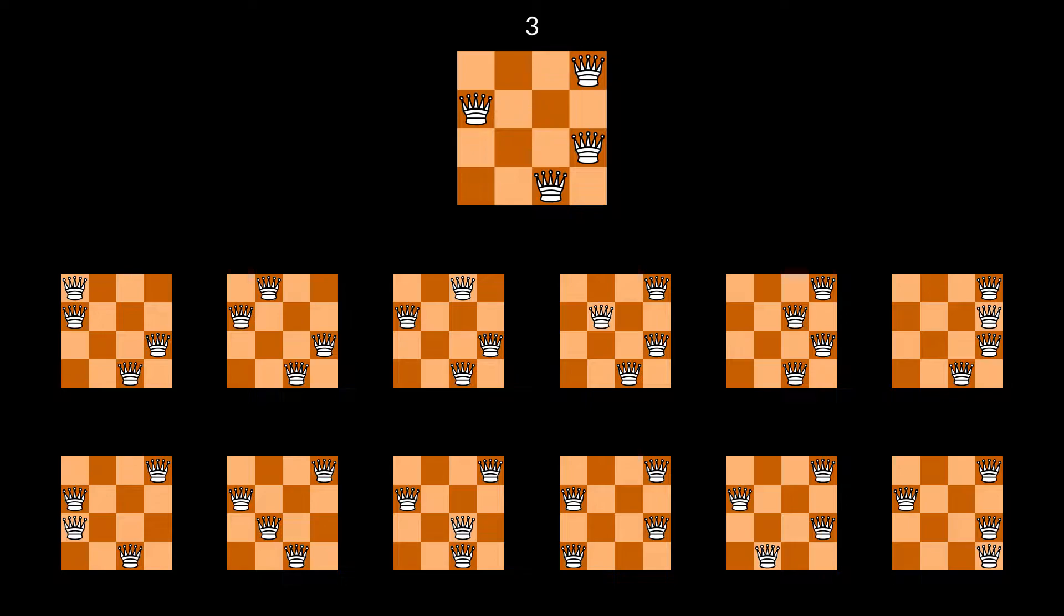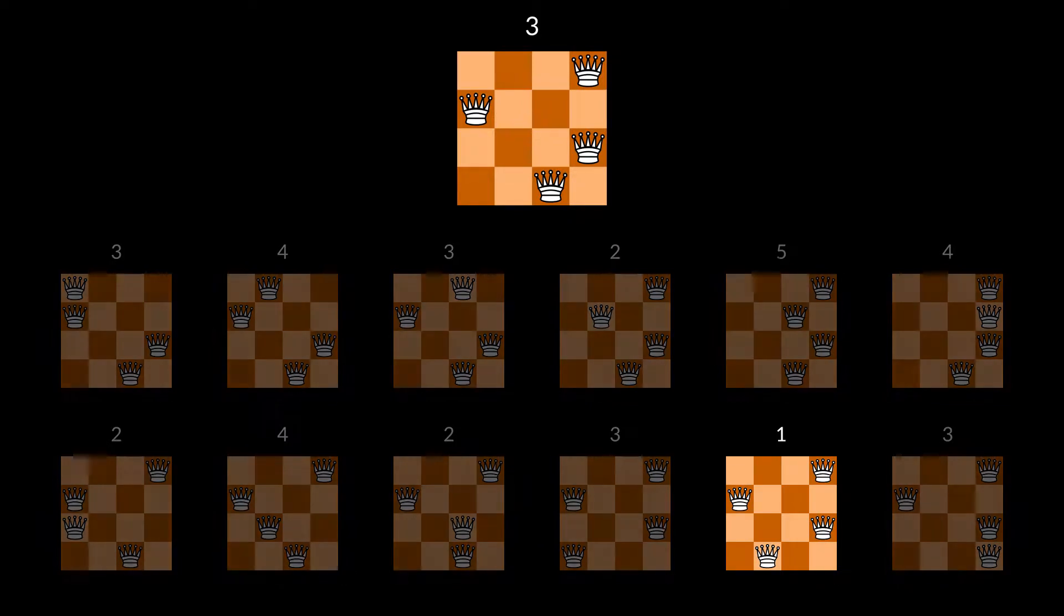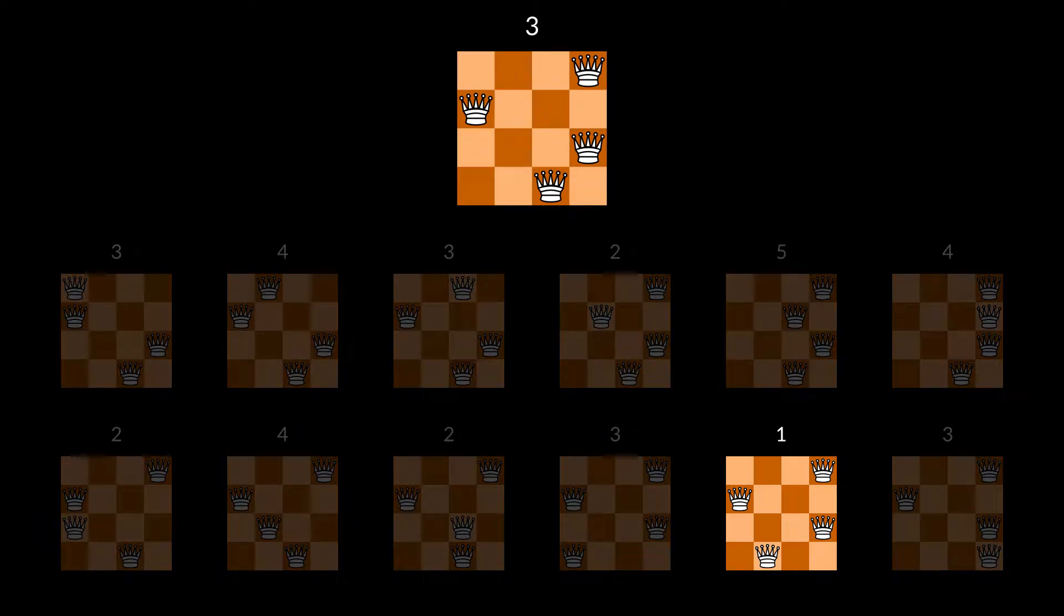The algorithm counts the number of conflicts for each of these states, and then picks the state with the fewest conflicts. In this example, the best state is this one, because it only has a single conflict. If there were multiple states tied for the fewest number of conflicts, the algorithm would pick randomly between them.